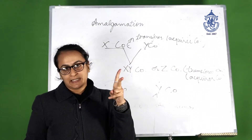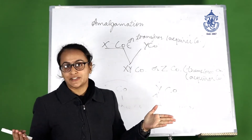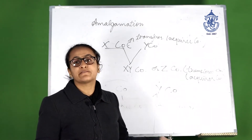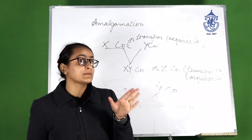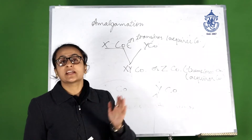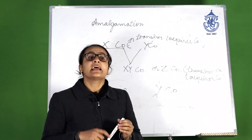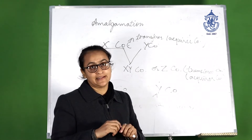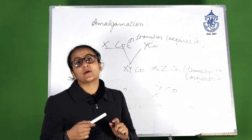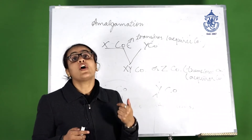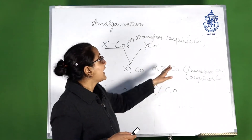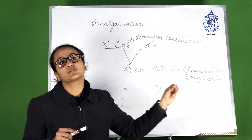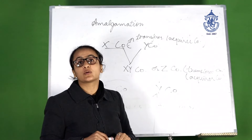Under IND AS 103, there is only one type of amalgamation — amalgamation in the nature of purchase. Pooling of interest method will no longer be available; instead, the acquisition method will be used. Under the acquisition method, you are allowed to make changes in the book values of assets and liabilities. Assets and liabilities shall be recorded at fair values, or at the values at which the acquirer company has taken them over. Assets and liabilities not taken over by the acquirer will not be recorded in the books of accounts.